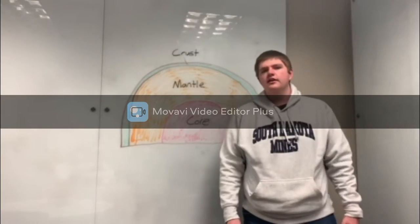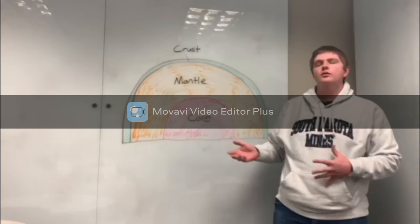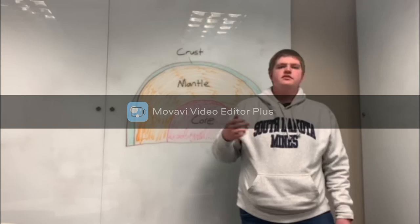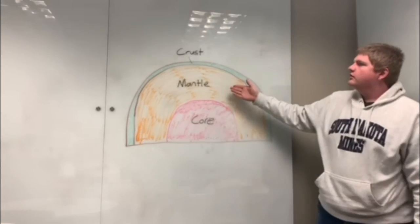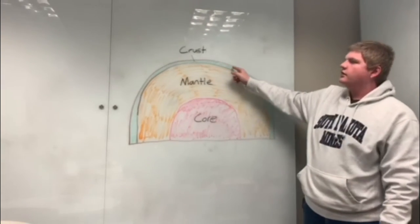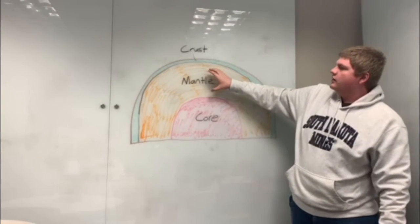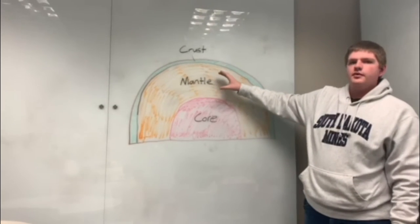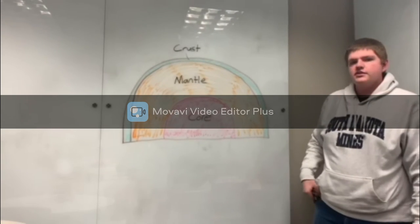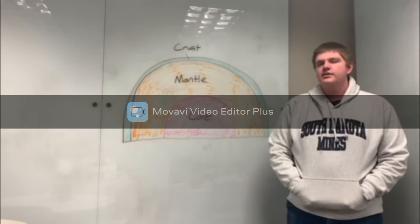When it comes to the layering of the Earth, there are different ways we can look at it, because the Earth can be separated into layers either based on density or based on its strength. For density, it'll start with the crust on the outside, which will be the least dense, go towards the larger section which is the mantle, which will be more dense with darker rocks, and then eventually down to the core, which has the highest density of all materials.